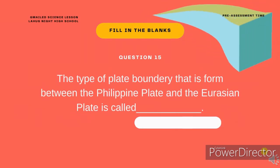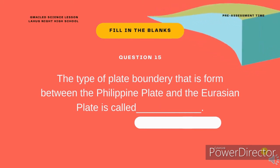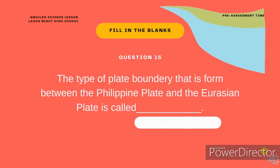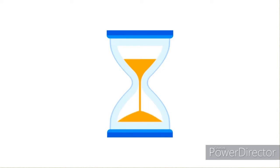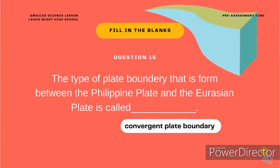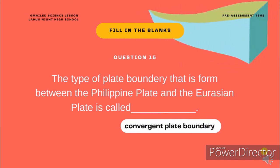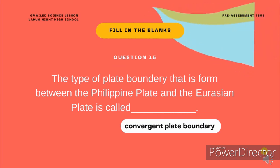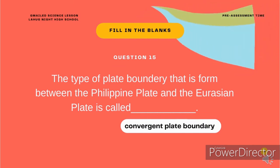Fill in the blanks. Question 15. The type of plate boundary that is formed between the Philippine plate and the Eurasian plate is called convergent plate boundary.